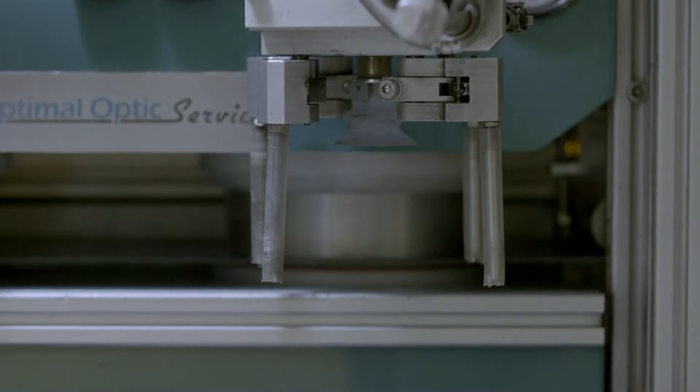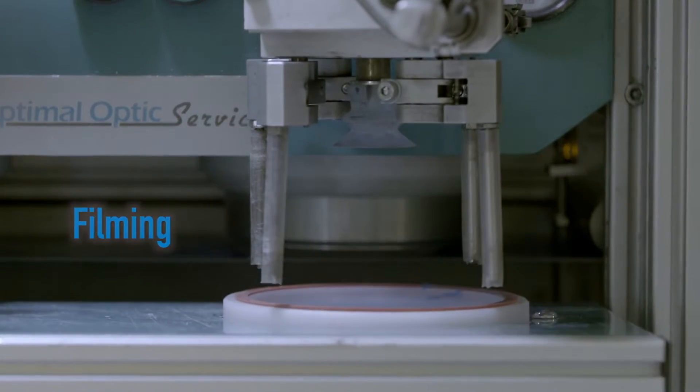A protective film is applied to protect the front surface of the lenses. It is the step of filming.